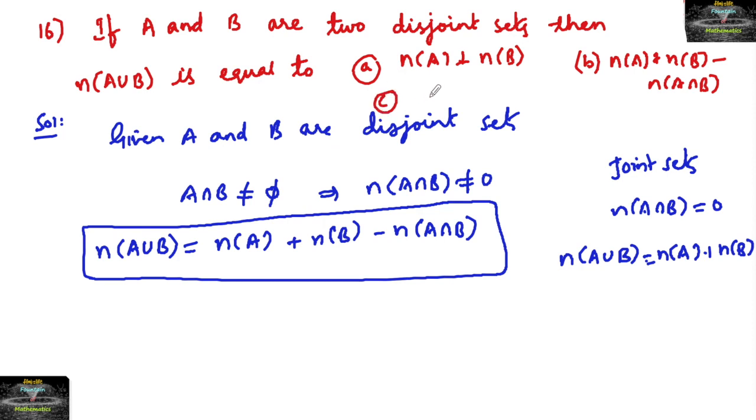Option C is given: n(A∩B). And option D is given: n(A) into n(B). So we can go with option B.